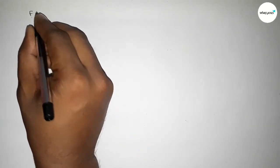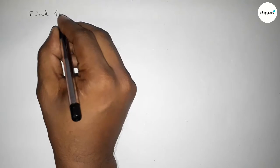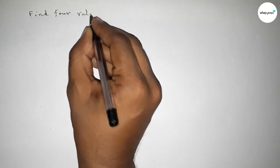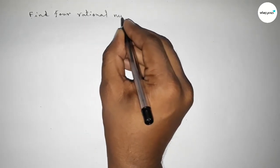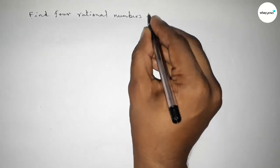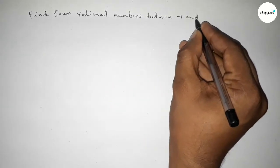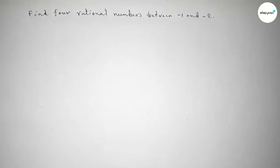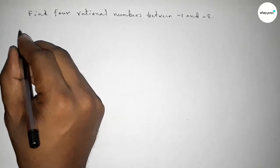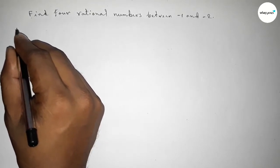Hi everyone, welcome to SI Share Classes. Today in this video, we have to find four rational numbers between -1 and -2. Let's start the video. First of all, let's solve this problem.